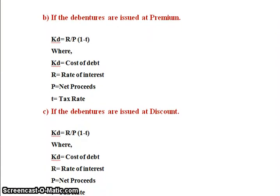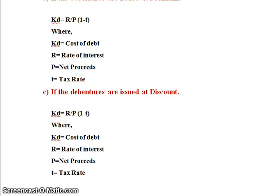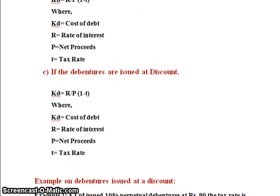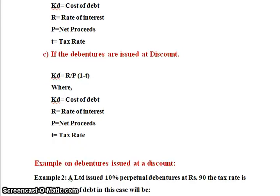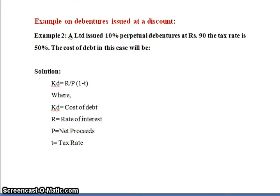Before that, let us understand the formula for debentures issued at premium or discount. In both cases the formula is: KD = R ÷ P × (1 − T), where KD is the cost of debt, R is the rate of interest, P is the net proceeds, and T is the tax rate. The formulas for premium and discount issuance are structurally the same.